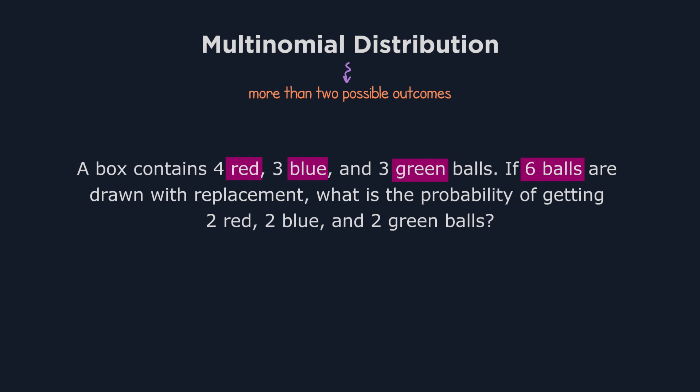It's not about when the first success happens, or how many successes occur in a fixed number of trials. Instead, we're dealing with multiple outcomes simultaneously, and we're interested in how often each outcome occurs within a fixed total number of trials. So, this is a perfect example of a multinomial distribution problem.